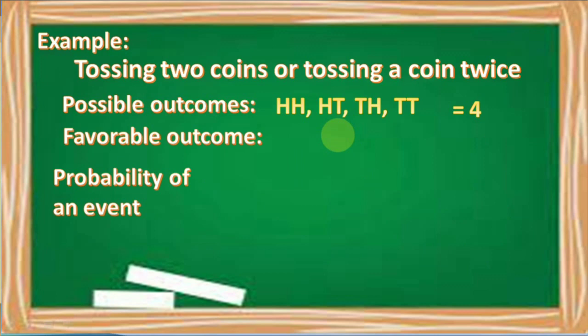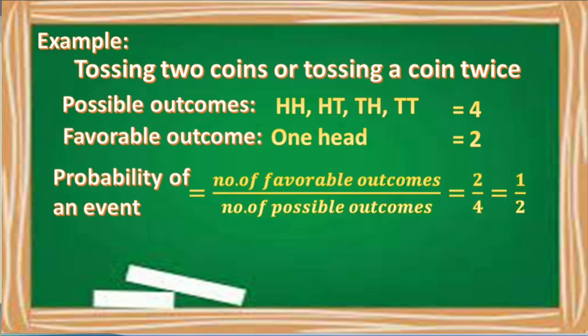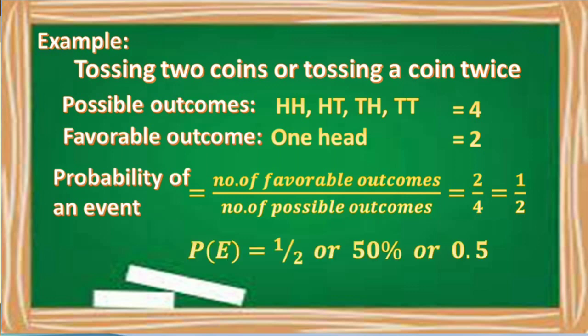Say our assigned favorable outcome is 1 head. Among the four possible outcomes, we have two possible outcomes containing 1 head, and these are head-tail and tail-head. Therefore, the number of favorable outcomes is 2. Thus, the probability of an event is equal to 2 over 4, or 2/4, which is equal to 1/2. P(E) = 1/2, or 50%, or 0.5.